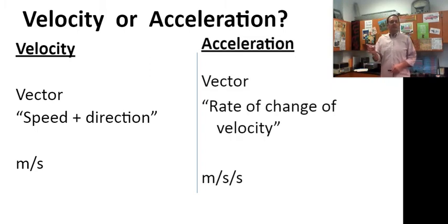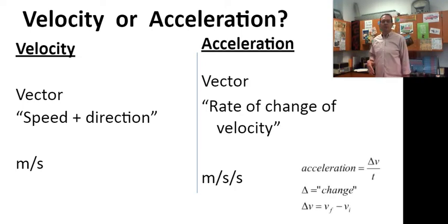But acceleration, it's also a vector. But it's the rate of change. It's the rate of change of velocity. And that velocity has to change in order for there to be an acceleration. Meters per second squared is the common unit, but I don't like that. Meters per second every second is the one that I prefer. And here's the equation for it. Acceleration is the rate of change of velocity, right? So it's divided by time.